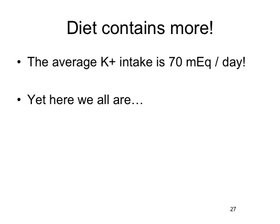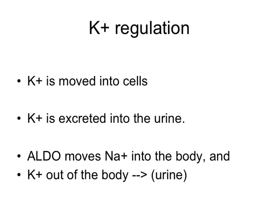So how does our body keep us from getting into trouble when we take in so much excess potassium? The answer is twofold. First, potassium is moved into the cells — it's the extracellular fluid potassium that we need to critically regulate. If we take potassium out of the extracellular fluid and move it into the cells, it's no longer a danger. After that, the potassium is excreted into the urine, and the cells give up the excess potassium they stored. The hormone aldosterone moves sodium back into the body and helps us excrete potassium into the urine.